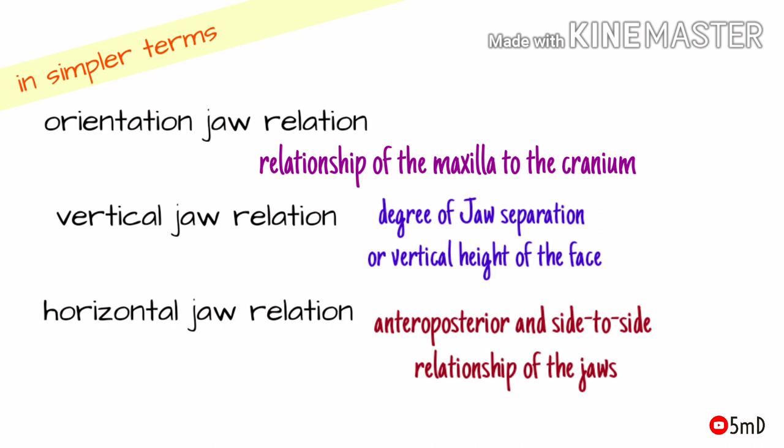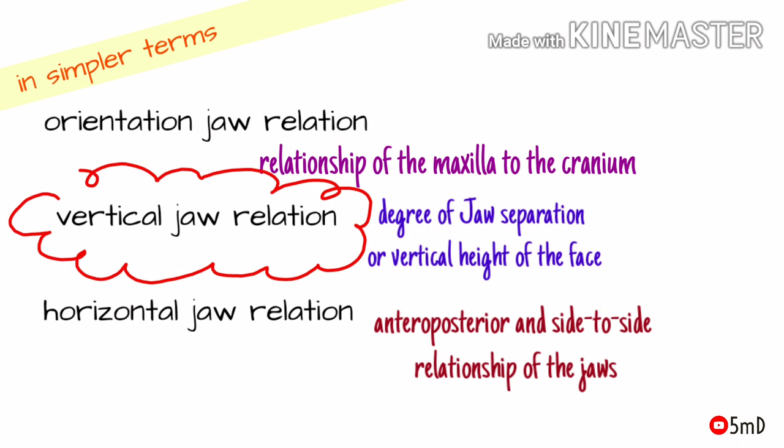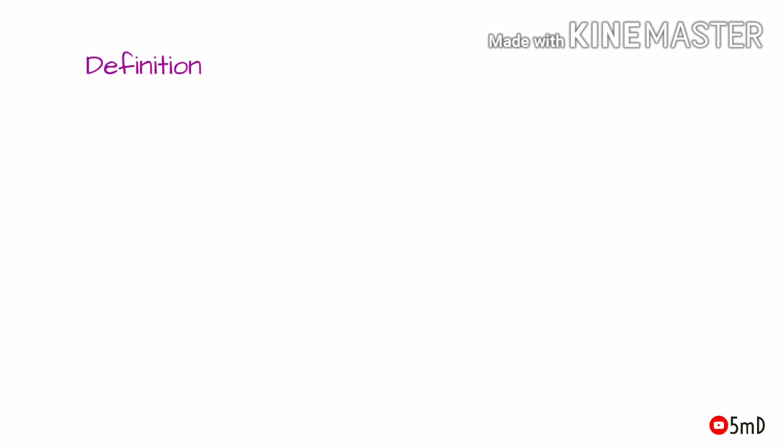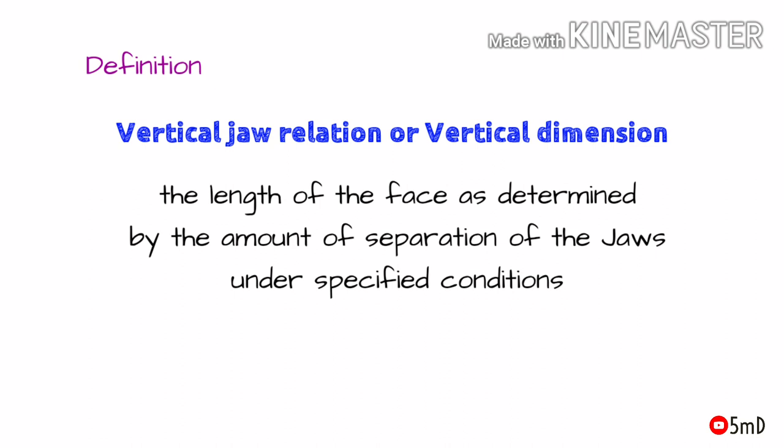In horizontal jaw relation, it is the side-to-side relation of maxilla and mandible, or the anteroposterior relationship of the maxilla and mandible. In this video, we will see in detail about vertical jaw relation alone — what is its significance and the methods to record vertical jaw relation.